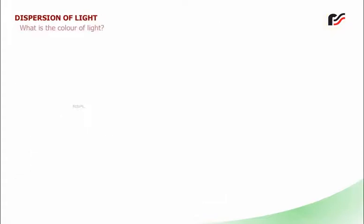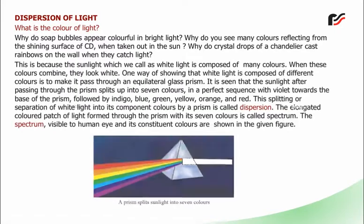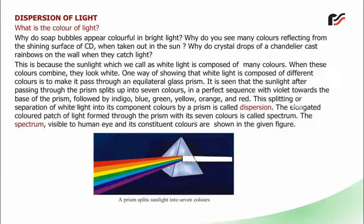Dispersion of light: What is the color of light? Why do soap bubbles appear colorful in bright light? Why do you see many colors reflecting from the shining surface of a CD when taken out in the sun? Why do crystal drops of a chandelier cast rainbows on the wall when they catch light? This is because the sunlight, which we call white light, is composed of many colors. When these colors combine, they look white. One way of showing that white light is composed of different colors is to make it pass through an equilateral glass prism.